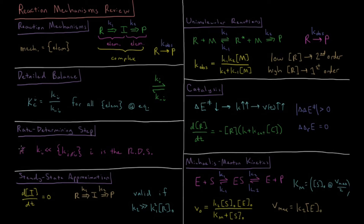If we have a situation where there's a multi-step or complex reaction and one of the rate constants is much much smaller than all of the other rate constants, then that means that step is going to be what's called the rate determining step.